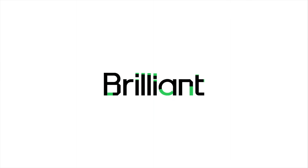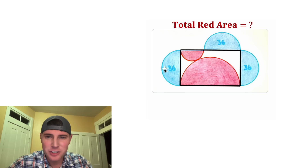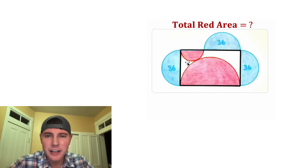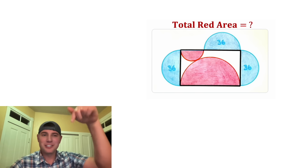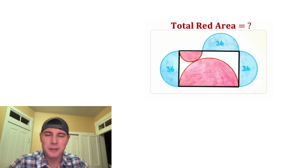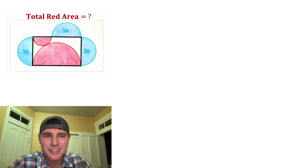This video is sponsored by Brilliant. Hey guys, this looks like a fun one — it's giving us three semicircles with area 36, and it wants to know the total area of these two red semicircles. If you want to try it on your own, pause it right now, because I'm going to solve it in three, two, one.